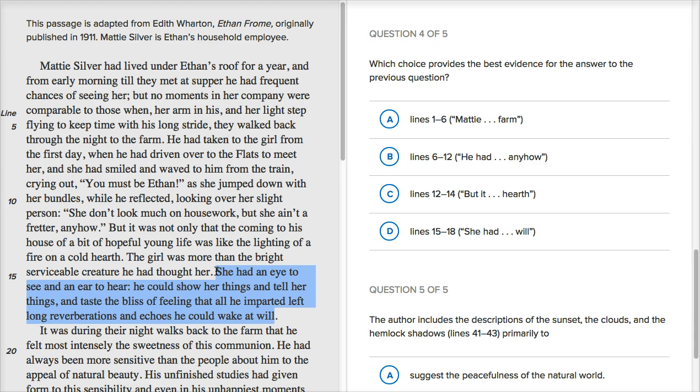Actually, I happened to highlight those exact lines. I like to do these, as you can tell, in real time so that I'm experiencing it as you would experience it. But luckily, I literally, well, anyway, you get the point. This is the line that's how, these are the lines that say that she was receptive. She had an eye to see and an ear to hear. He could show her things and tell her things. So, definitely go with that.